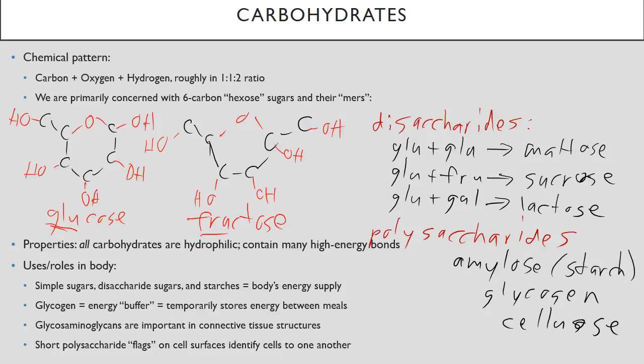Uses and roles in the body. Simple sugars, disaccharide sugars, and starch are all part of the body's energy supply food chain. Glycogen is an energy buffer that temporarily stores energy between meals. So your body will take in a lot of glucose, it can't use it all right away, so it stores it as glycogen. And then it pops glucose molecules off that glycogen whenever it needs energy between meals. There's a group of molecules called glycosaminoglycans that are important gel molecules in connective tissues. In particular, they help lubricate joint movement and serve as a shock absorber in tissues. And then short polysaccharide flags are posted on most of your cell surfaces to identify one cell to another.